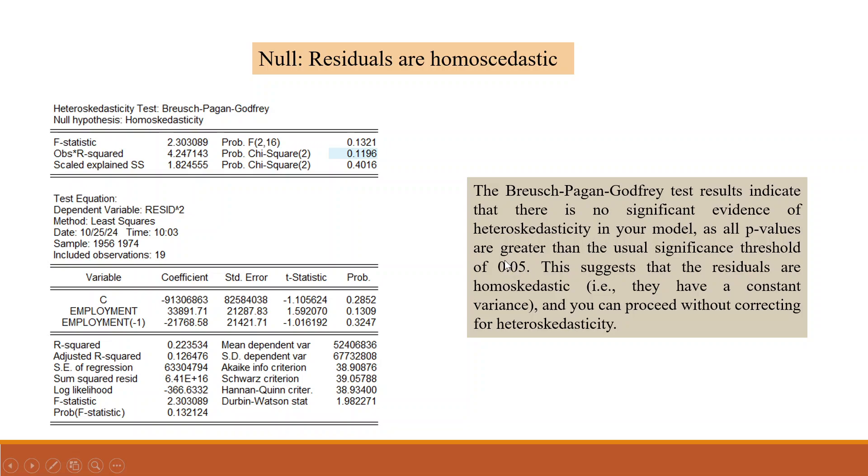As all p-values are greater than the usual significance threshold value of 0.05, this suggests that the residuals are homoscedastic and you can proceed without correcting for heteroscedasticity. So this is also good.